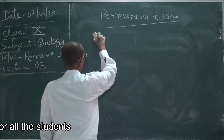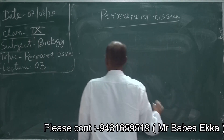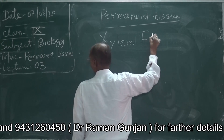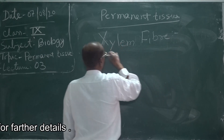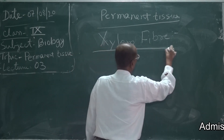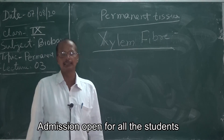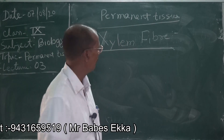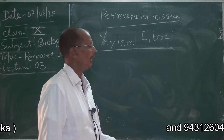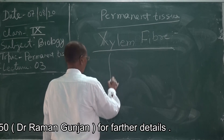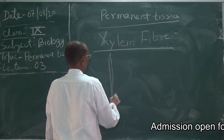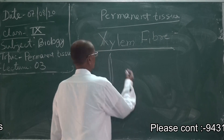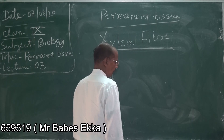Now I am discussing xylem fiber. Xylem fiber is like the simple fiber we studied in the previous class — the sclerenchymatous fiber. It is the fiber present in the xylem tissue — elongated cells. It is also a dead tissue and it provides mechanical strength to the xylem tissue. This is how xylem tissue is made up.